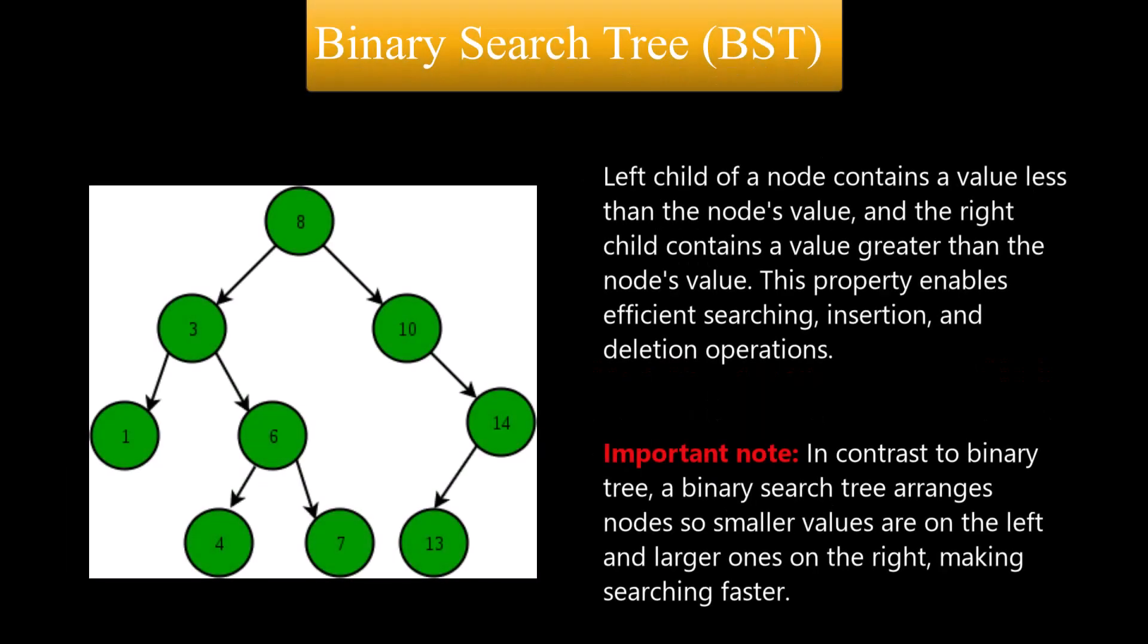Binary search tree or BST is a binary tree in which the left child of a node contains a value less than the node's value, and the right child contains a value greater than the node's value. This property enables efficient searching, insertion, and deletion operations.